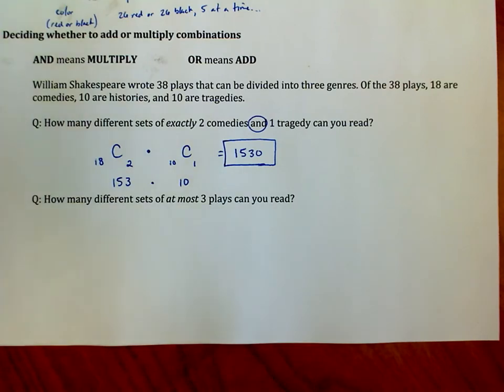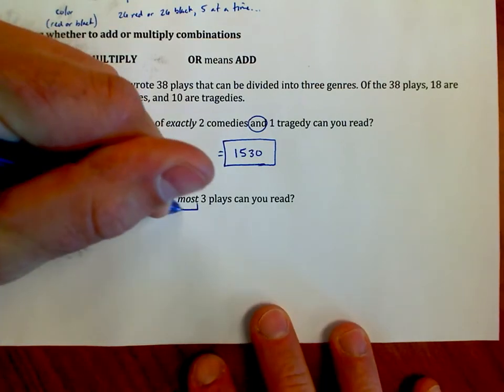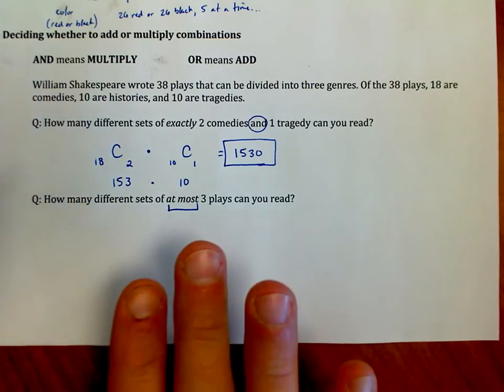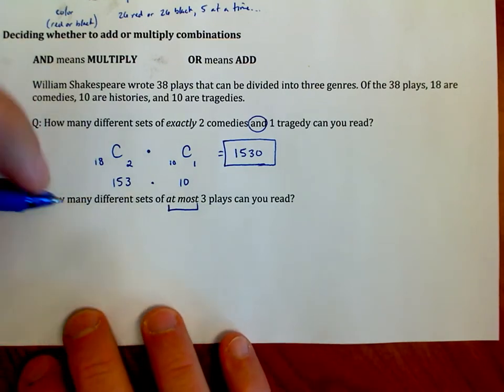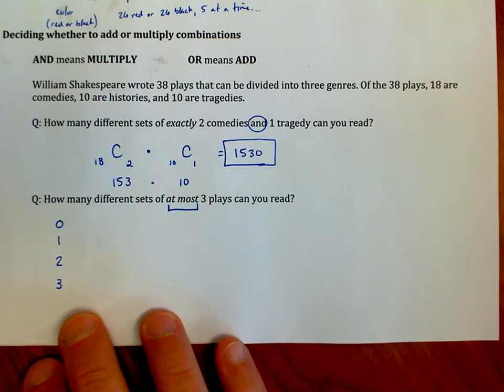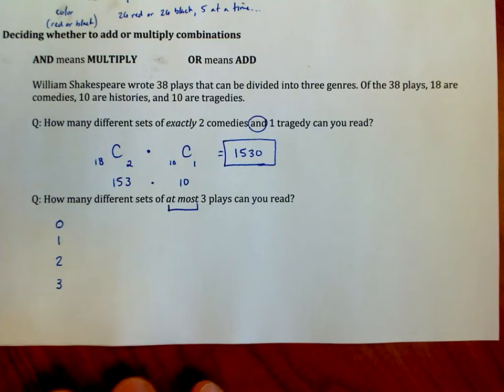Okay, now, second question. How many different sets of at most three plays can you read? And this is a little bit more difficult. See, when it says the word at most, we've got to be careful, because that means that I can go through, and I don't care what the genre is, but it says I can go through and I can read zero of his plays. I can read one. I can read two. Or I can read three of his plays, right, out of the 38.